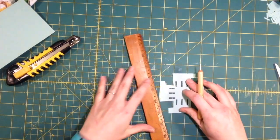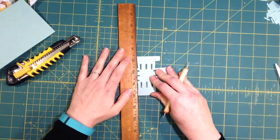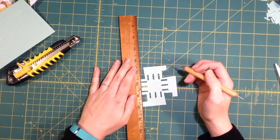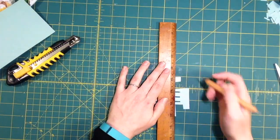Then I score the lines to fold up the sides, and I score the tabs to glue around the top.